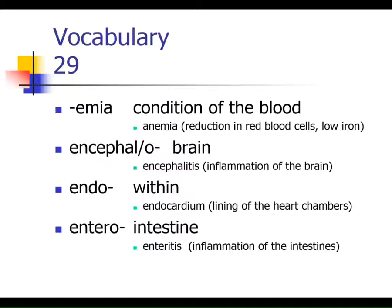'Cephal' means head, and 'encephal' refers to the brain — what's inside the head. So encephalitis is inflammation of the brain. 'Endo' means within: endocrine refers to organs that secrete within the body; endocardium is the lining within the chambers of the heart. 'Entero' refers to the intestines — enteritis is inflammation of the intestines. 'Epi' means on: epidermis is on the dermis, and epicardium is a layer on the heart.